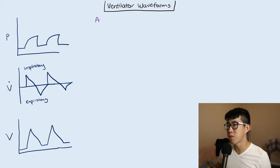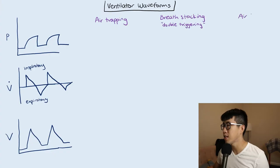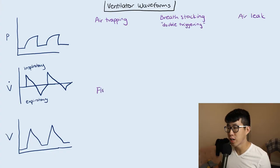There are a few problems that I want to go over that may come up when you're treating patients or on rounds. Those are going to be air trapping, breath stacking or double triggering, air leak, and flow hunger. And then I'm briefly going to go over some flow volume and pressure volume loops.